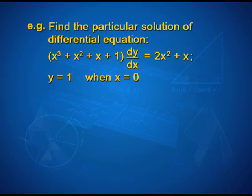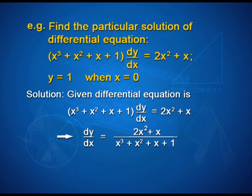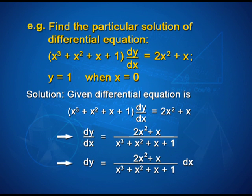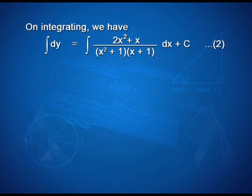Now let us solve an example involving a particular solution. Example: find the particular solution of (x³ + x² + x + 1)·(dy/dx) = 2x² + x, given y = 1 when x = 0. The equation gives dy/dx = (2x² + x)/(x³ + x² + x + 1), so dy = (2x² + x)/[(x² + 1)(x + 1)] dx. On integrating: y = ∫(2x² + x)/[(x² + 1)(x + 1)] dx + c.